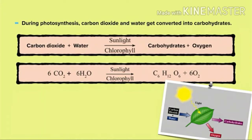We will see the equation. Carbon dioxide plus water, in the presence of sunlight and chlorophyll, give rise to carbohydrates and oxygen. Carbohydrates means glucose, C6H12O6.